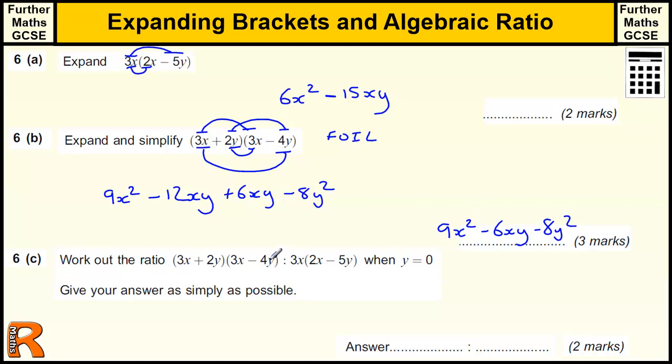OK, now part c, which looks ridiculously complicated, work out the ratio given as simply as possible. Now to start with, we have this little thing here, y equals 0 tagged on the end, so essentially that means that this is 0, this is 0, and this is 0.